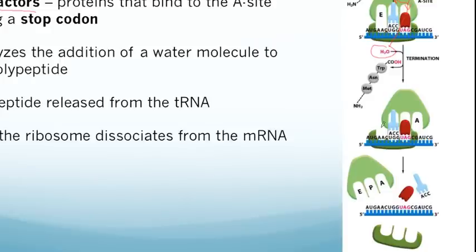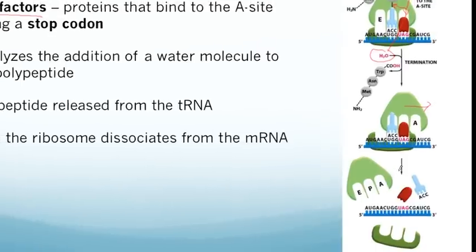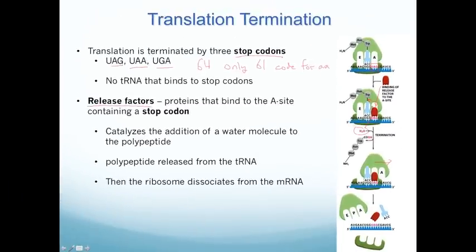Once the large ribosomal subunit translocates, the release factor disassembles the entire ribosome off of the mRNA. The released polypeptide is now a finished protein free in the cytoplasm. The disassembled ribosome can then go and reassemble at the start of a new mRNA to translate more proteins. That concludes this review lecture on translation — know the steps of translation initiation, normal elongation, and how translation terminates.